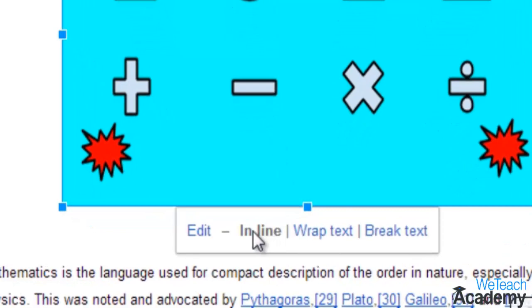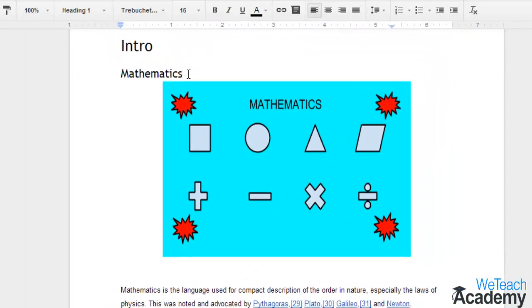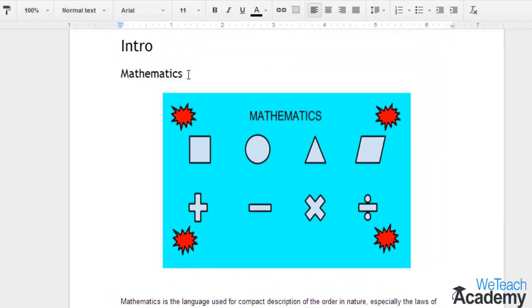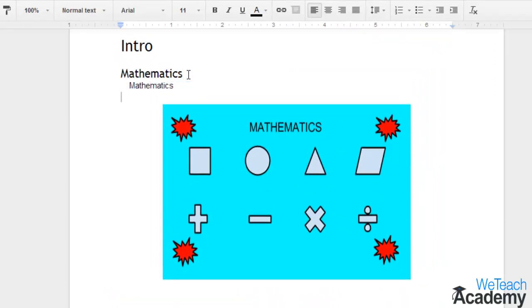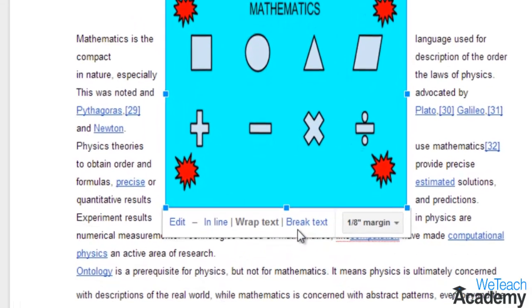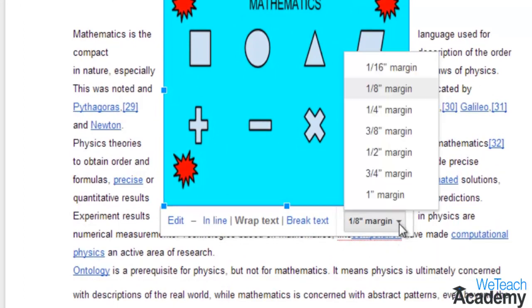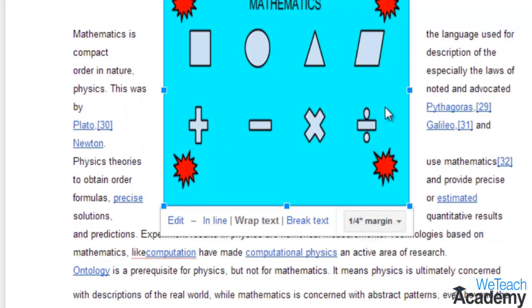You will observe the different options available for positioning. 'Inline' means that the image will adjust according to your text—that is, if you're typing any additional text before it, the image automatically shifts its position accordingly. 'Wrap text' means the text will wrap around the image, and you can even adjust your text margins according to your preferences.